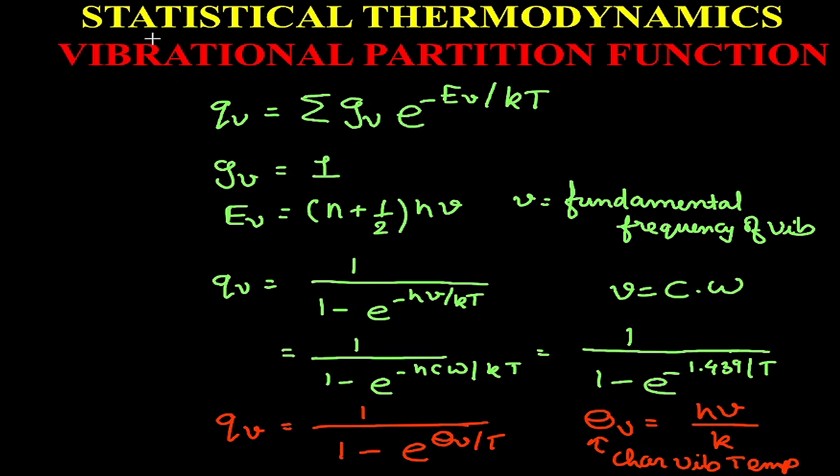Today under statistical thermodynamics, we will be looking at the vibrational partition function. The vibrational partition function is given by Qv and equals the summation of Gv e^(-Ev/kT).